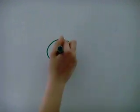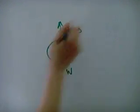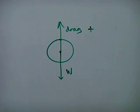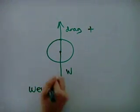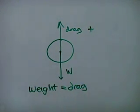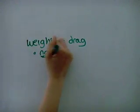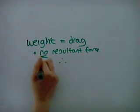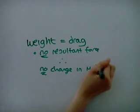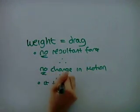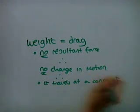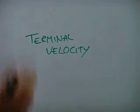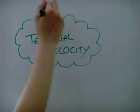A falling object has a weight, which is opposed by the upwards force of drag. The drag increases with speed until the weight equals the drag. When the weight equals drag, there are no resultant forces, therefore there is no change in motion, and therefore it will travel at a constant velocity. This constant velocity is called terminal velocity.